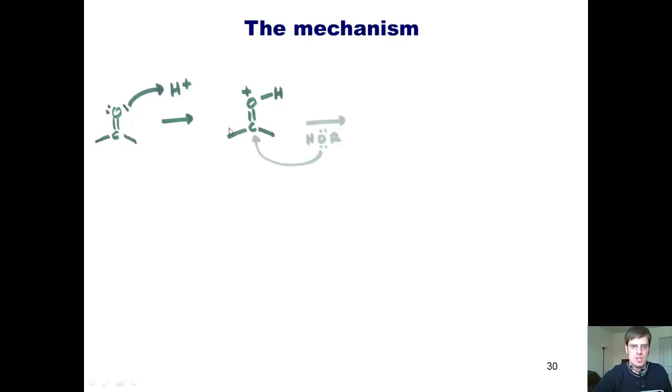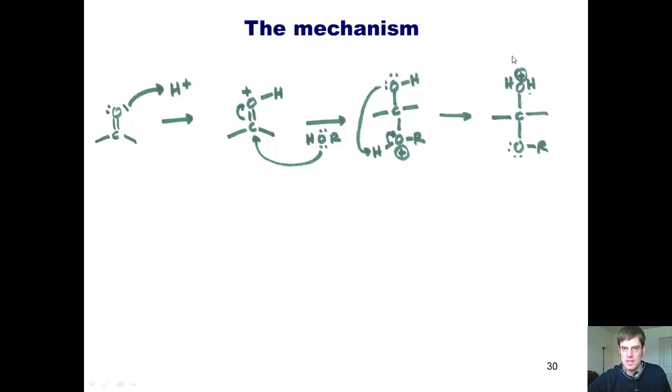Once that intermediate is achieved, my alcohol will come in and attack at the carbonyl. Thus, the lone pair electrons on the alcohol oxygen come into that carbonyl carbon and push these pi electrons into that oxygen to neutralize the positive charge. That gives me this type of intermediate. At this stage, the electrons on this oxygen reach around and grab this hydrogen, thrusting these electrons into this positively charged oxygen to neutralize the charge. That then gives me this intermediate.